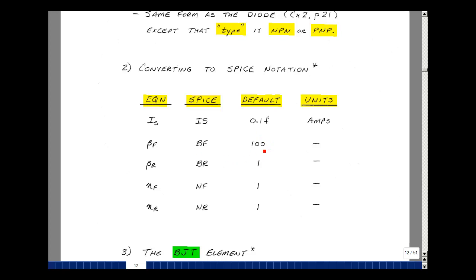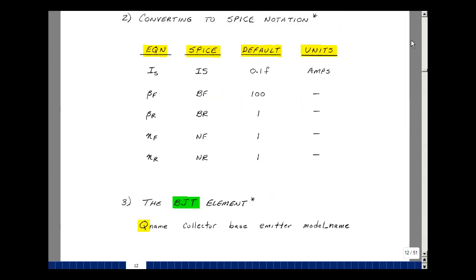Eta F and eta R also defaulted to 1, which are reasonable numbers for silicon.